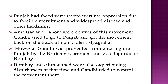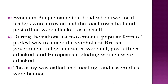Gandhi was prevented from entering Punjab by the British government and was deported to Bombay. Bombay and Ahmedabad were also experiencing disturbances. Events in Punjab came to a head when two local leaders were attacked and arrested, and the local town hall and post office were attacked as a result. Telegraph wires were cut off, post offices attacked, and Europeans including women were also attacked. The army was called and meetings and assemblies were banned.